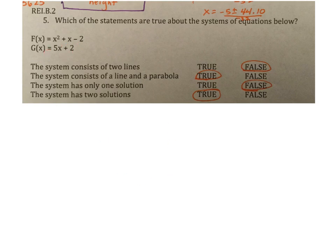This one is linear. So then the second one says the system consists of a line and a parabola. Yes, this is your parabola. This is your line. The system has only one solution, meaning they only cross through one time. This helps if you look at the graph. Okay. The system has two solutions. This is true because you had a parabola and you had your line. So they usually cross through at two points.